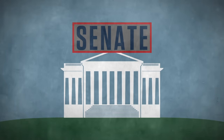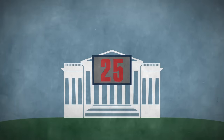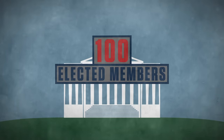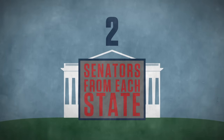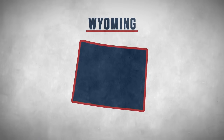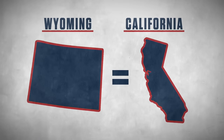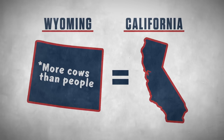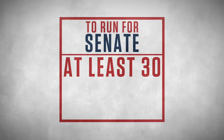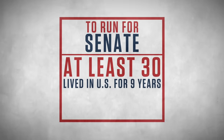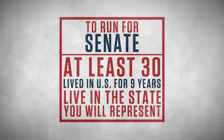The Senate, or the upper house, is made up of only 100 elected members, with two senators from each state. A state like Wyoming has as strong a voice as California, even though California has a much larger population. To run for Senate, one must be at least 30 years old, have lived in the U.S. for nine years, and live in the state that they will represent.